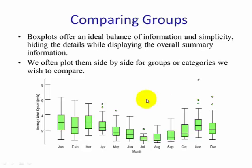Comparing groups. Here are the months of the year, and this is the average wind speed. And very quickly, we can see that box plots allows us to compare multiple data sets very quickly.